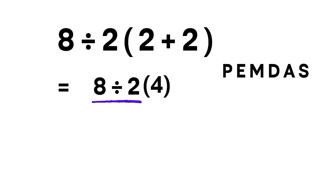First operation: 8 divided by 2, which gives 4. Next operation: 4 times 4, which gives 16. So the correct answer, using the modern order of operations, is 16.